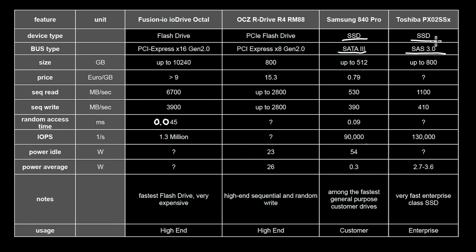Other than those SATA/SAS SSDs, there are different ways of connecting flash memory to a computer. One is to use a PCI bus — those are PCI drives — and those devices are not limited by those interfaces anymore. The performance numbers are kind of insane: you get 6 gigabytes per second read performance and almost 4 gigabytes per second sequential write performance. Random access time is 45 microseconds, or 0.045 milliseconds. You have 1.3 million IOs per second — really super fast, this is high end. The price is about 9 euros per gigabyte, and you can get up to 10 terabytes on that device directly connected to PCI.